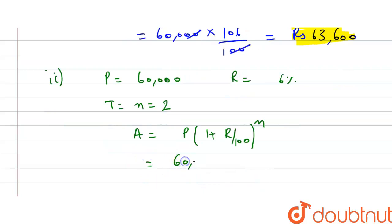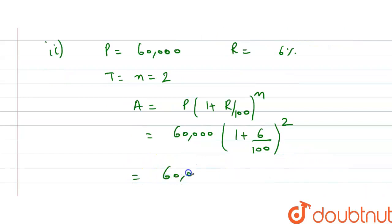Principal is 60,000, multiplied by (1 plus rate of interest 6 divided by 100) raised to the power 2. So it equals 60,000 times 106/100 times 106/100. The zeros cancel each other.